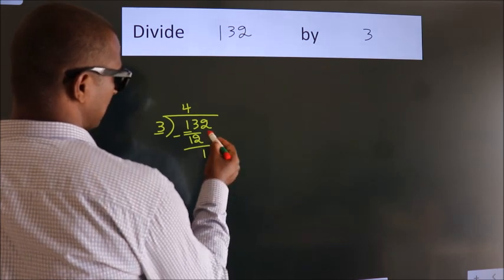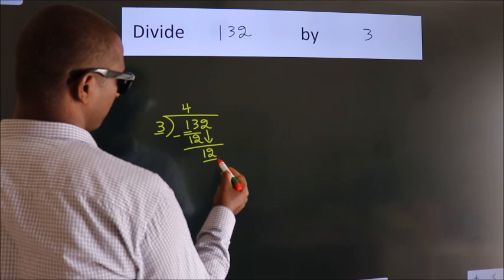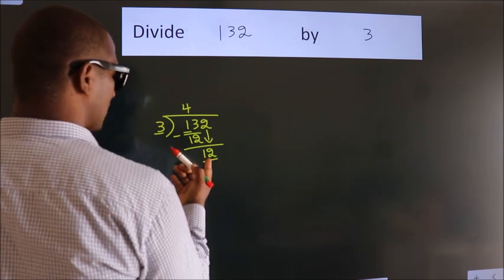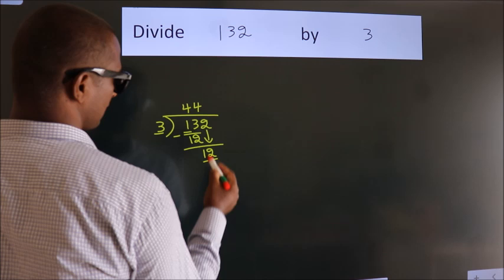After this, bring down the next number. So bring 2 down, so 12. When do we get 12? In the 3 table, 3 times 4, 12.